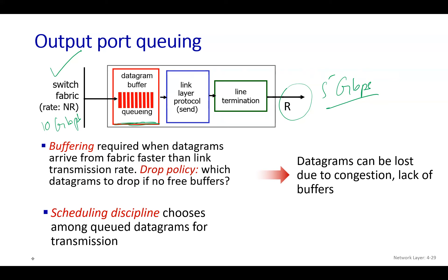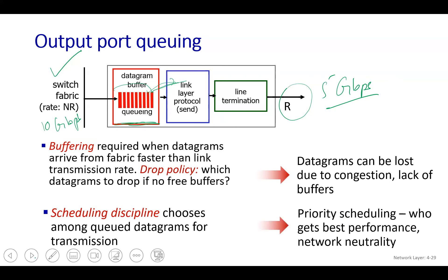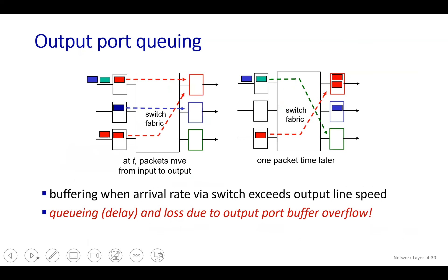When packets must be dropped, we need a policy to decide which ones to drop. We also need to consider the scheduling discipline — whether to process packets in first-come-first-served order or use some other approach. We can also do priority scheduling, where certain packets are prioritized and transmitted first, though this raises the issue of network neutrality.